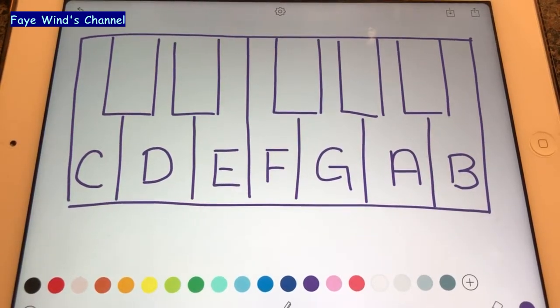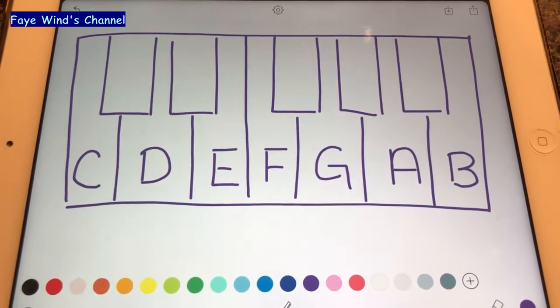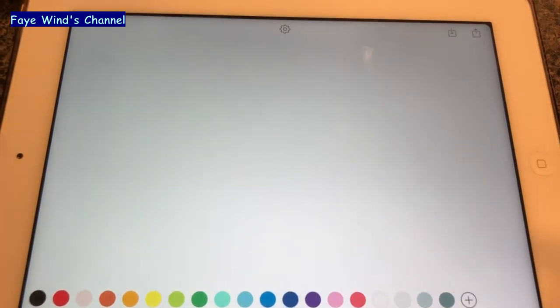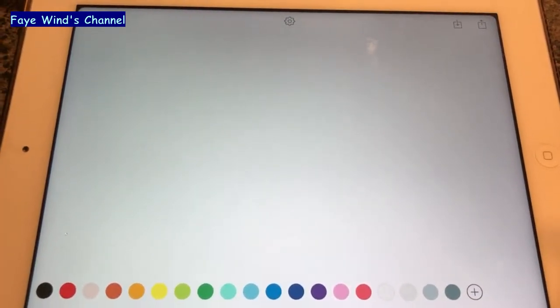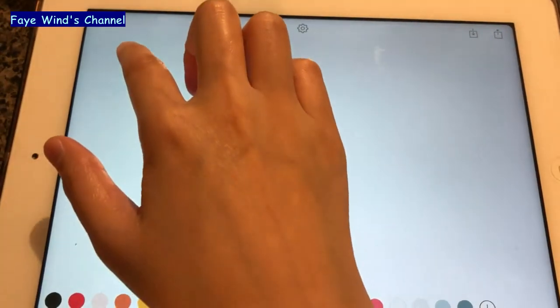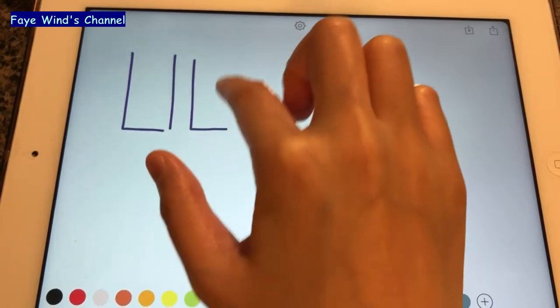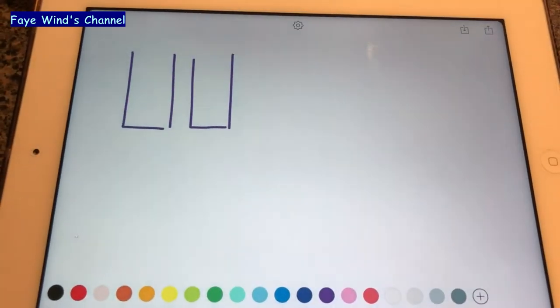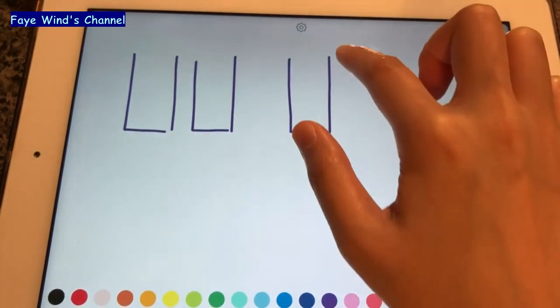So this is how it looks. And I'm going to show you how to do this. Let me erase the screen. First, you draw the set of two black keys. Leave a bit of gap in between. And draw the set of three black keys.